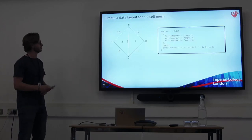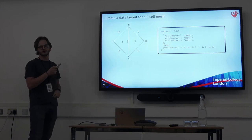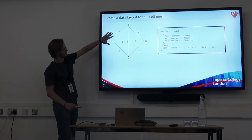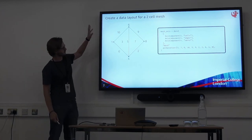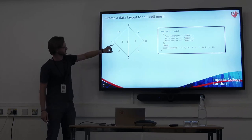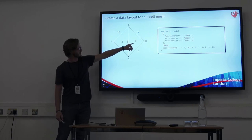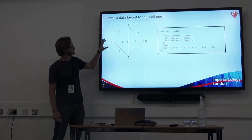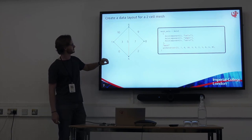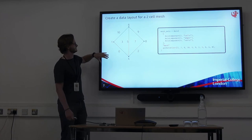I'm going to give you a very simple example. I have a two-cell mesh. I have applied a completely random numbering to it, so cell zero is actually the third thing and cell one is the seventh thing. How do I construct a data layout such that I can store degrees of freedom on different topological entities in this mesh?